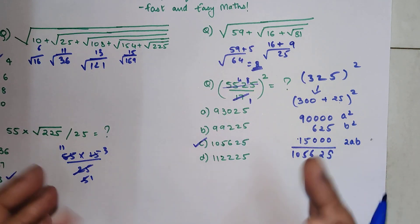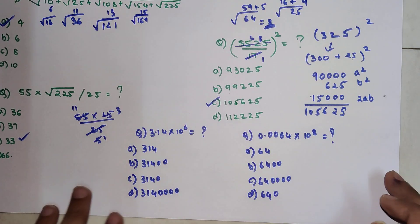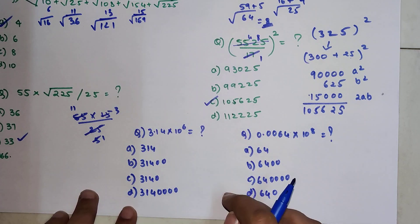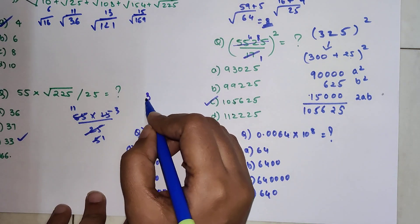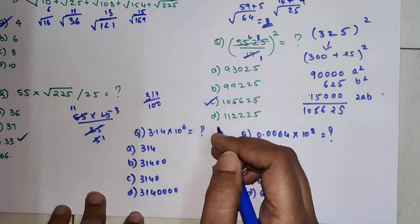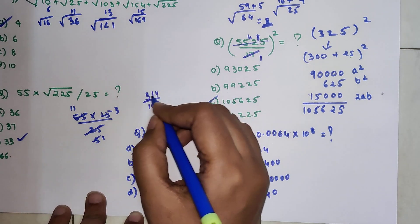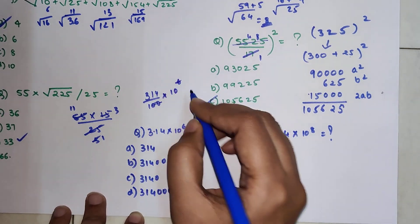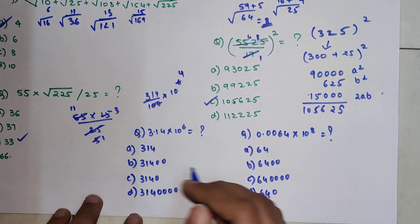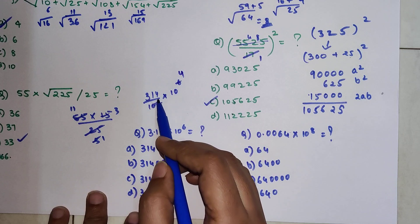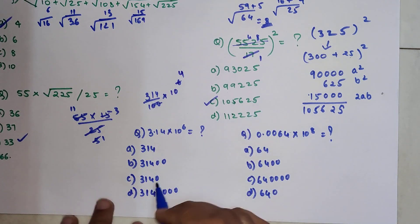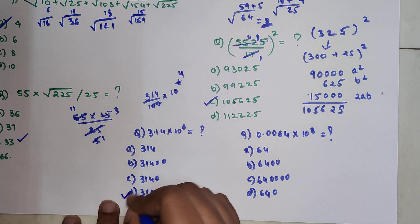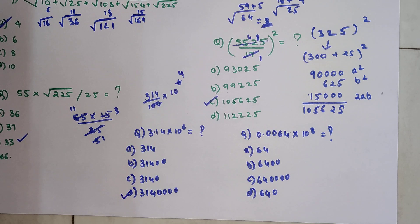Let's solve a few more questions. Here the question is 3.14 multiplied by 10 raised to 6. For those confused with decimals: 3.14 can be written as 314 upon 100, and multiplied by 10 raised to 6. The two zeros cancel, reducing the power of 6 by 2, giving 314 multiplied by 10 raised to 4. So your answer will have 314 followed by 4 zeros — option D is your answer.